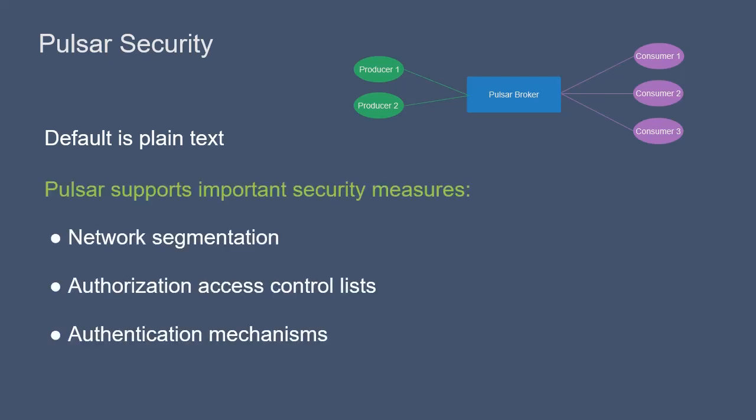Pulsar supports network segmentation and authorization access control lists, also known as ACLs, to restrict communication to only verified IP addresses.